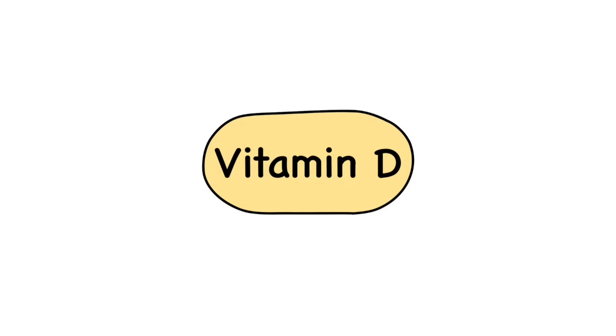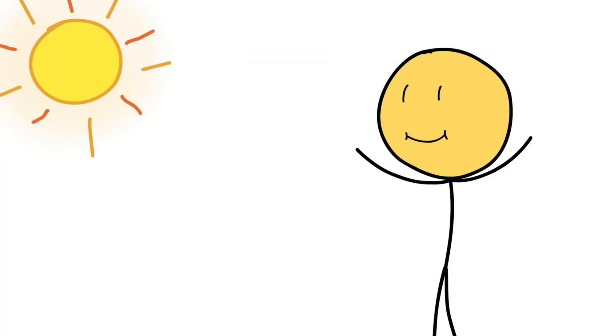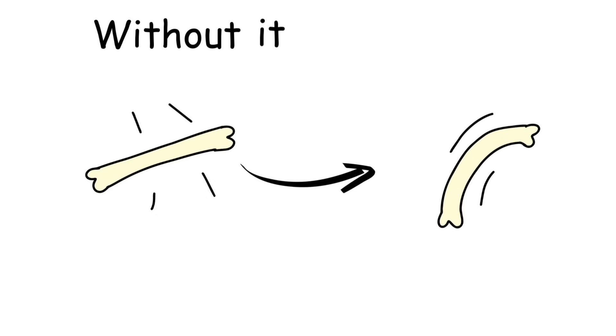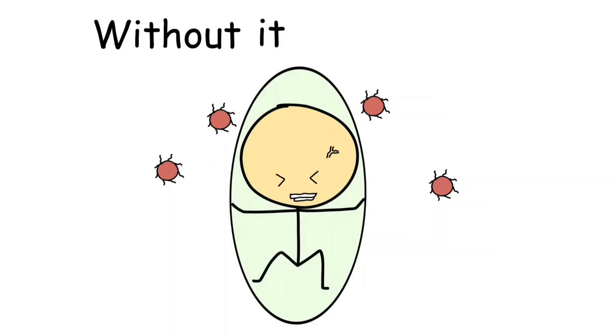Vitamin D isn't really a vitamin. It's more like a hormone your body makes when sunlight hits your skin. That's why it's called the sunshine vitamin. Without it, your bones soften, your muscles weaken, and your immune system struggles.